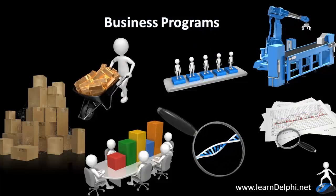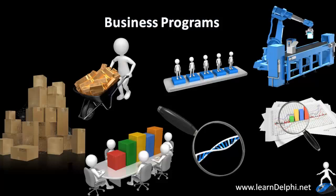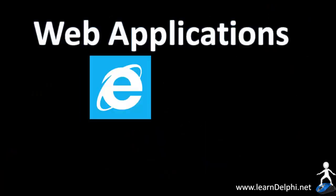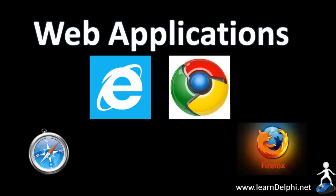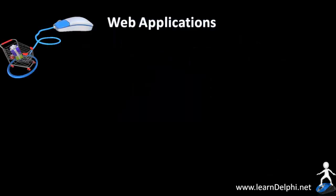I mentioned internet banking applications a moment ago — let's also talk about other web applications. Websites are displayed or rendered in programs called browsers. Some popular browser applications nowadays include Internet Explorer, Google Chrome, Safari, and Firefox. These browser applications were developed by programming teams to enable us to view web content. But the websites that are rendered in these browsers are also programs — we refer to them as websites.